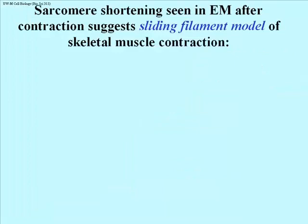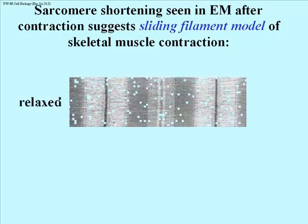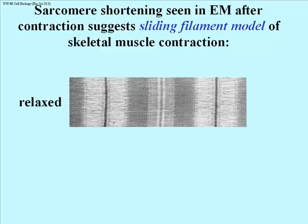Electron microscopists looked at skeletal muscle, both relaxed and contracted. They came up with a mechanism of contraction that involved the sliding of these actin and myosin filaments past one another. So what looked like interdigitating actin and myosin in the cartoon would be seen to slide past one another during muscle shortening or contraction. This is a very high powered, high resolution electron microscope picture through a sarcomere — a contractile unit of a myofibril — in its relaxed state.